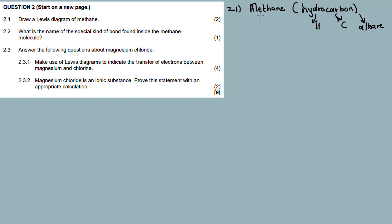In alkanes, there's ethane, methane, propane, butane, octane, pentane. So next time someone mentions ethane, you know it's a hydrocarbon. Methane — you know it's a hydrocarbon containing hydrogens and carbons. Now let's prepare a Lewis diagram for the methane molecule.